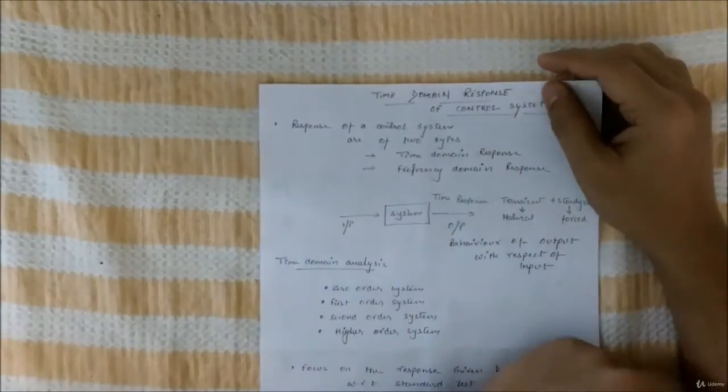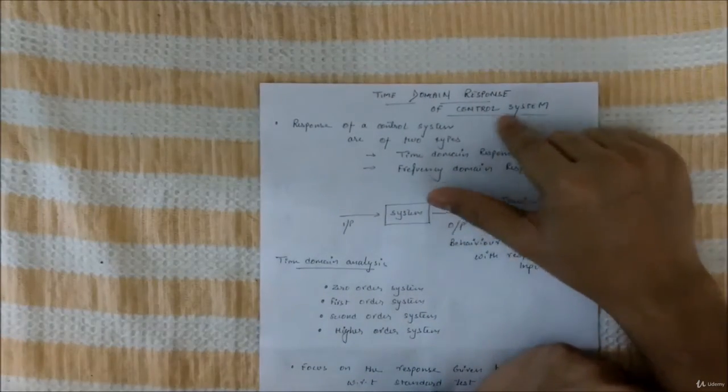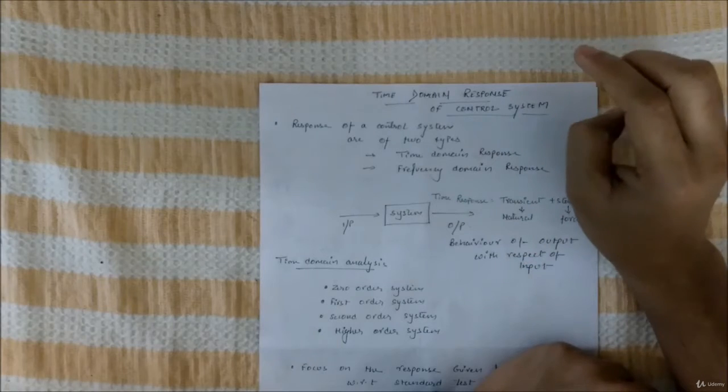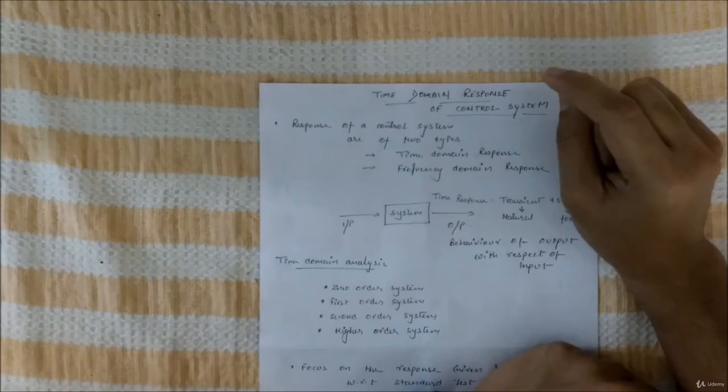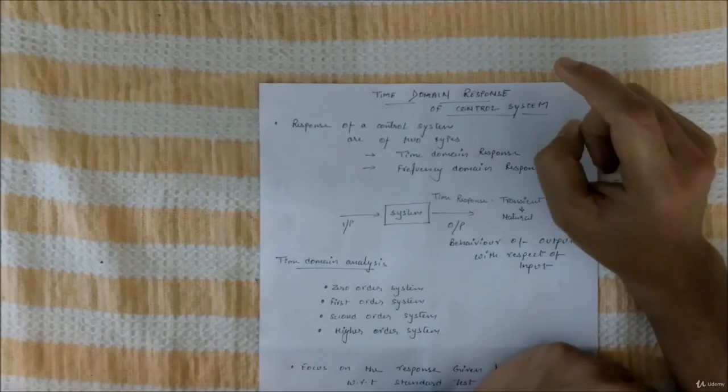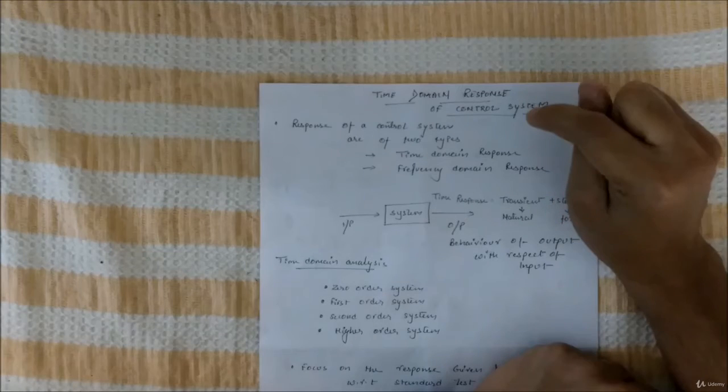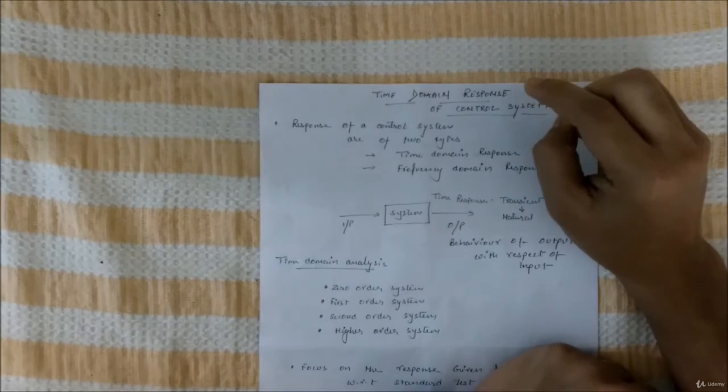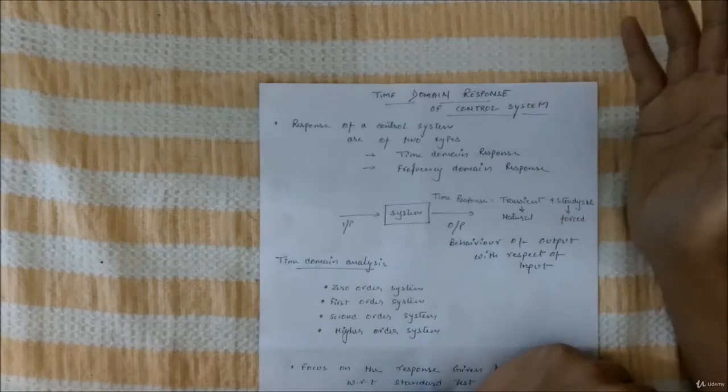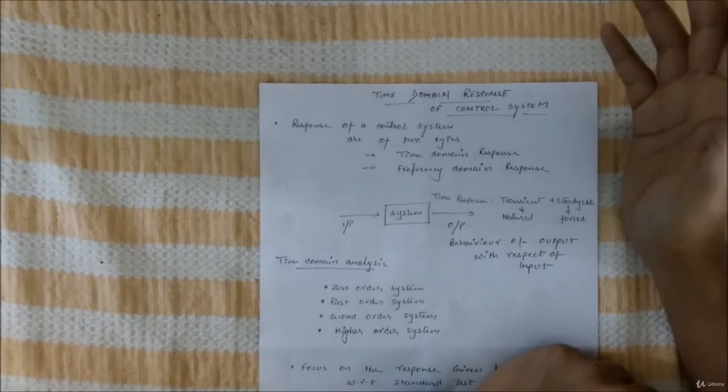What's going on guys, today I will be talking about time domain response of control systems. In my previous videos I have talked about the type of a system and order of a system, and then about initial value theorem and final value theorem. Please have a look at those videos if you don't know about these things because that will be used in time domain analysis of control systems.